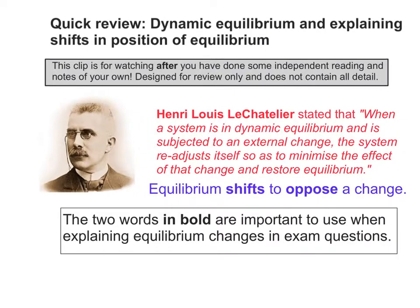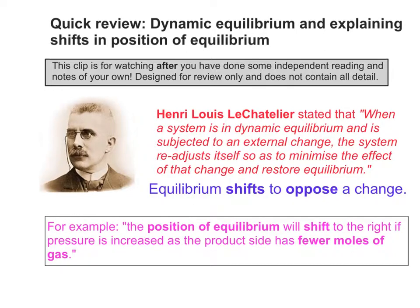It's also important to remember that when you're explaining equilibrium changes in exam questions, you're always trying to talk about equilibrium shifts and what change it's opposing — so it's opposing an increase in temperature or opposing a change in pressure. An example might be: the position of equilibrium will shift to the right if pressure is increased, as the product side has fewer moles of gas. You need to be careful with the language that you use.